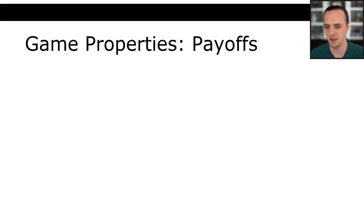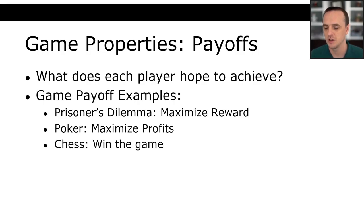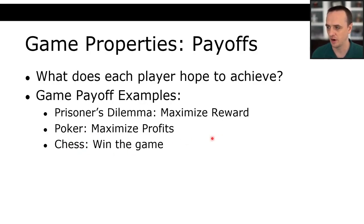What about the payoffs for a game? We just covered game theory and talked about payoffs — what each player hopes to achieve. This defines the algorithm we'll use. In the prisoner's dilemma we wanted to maximize our utility. In poker we may want to maximize our own profits without caring about others. In chess it's simpler — just win the game. There's a winner and a loser, and I want to win.